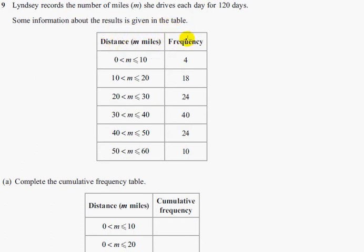We've got distance in miles and the frequency here. This is how many times it happens or the frequency of something happening. In this category here we've got greater than 0 miles but less than or equal to 10, so basically up to 10. Greater than 0 but up to 10 miles happened 4 times.